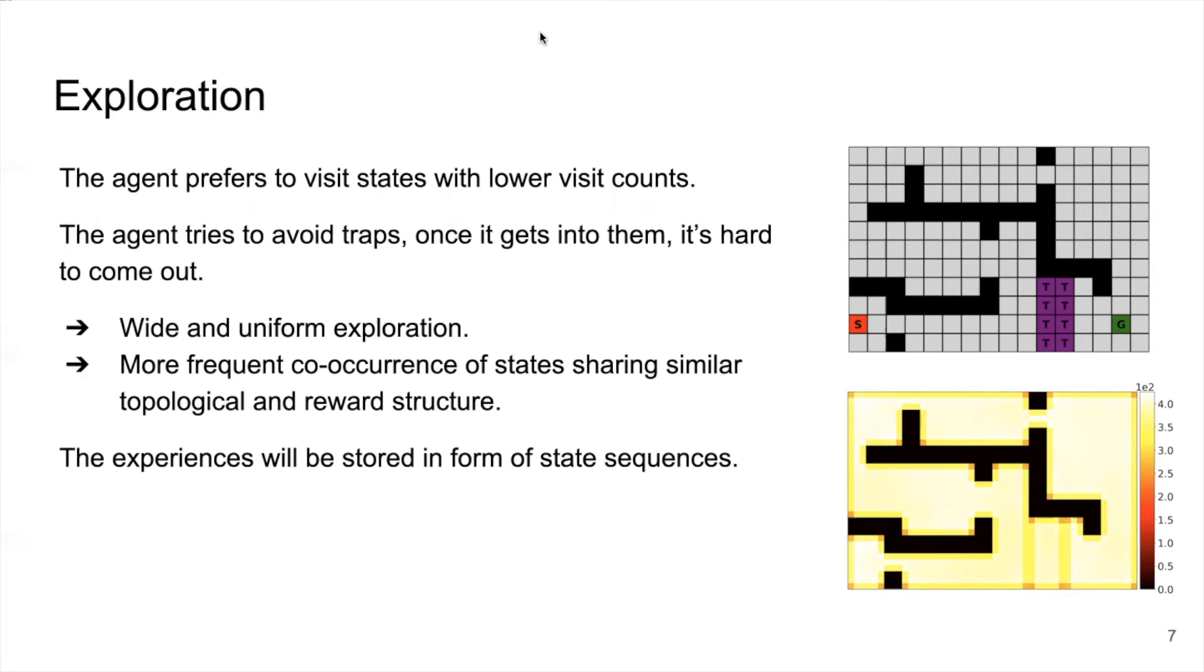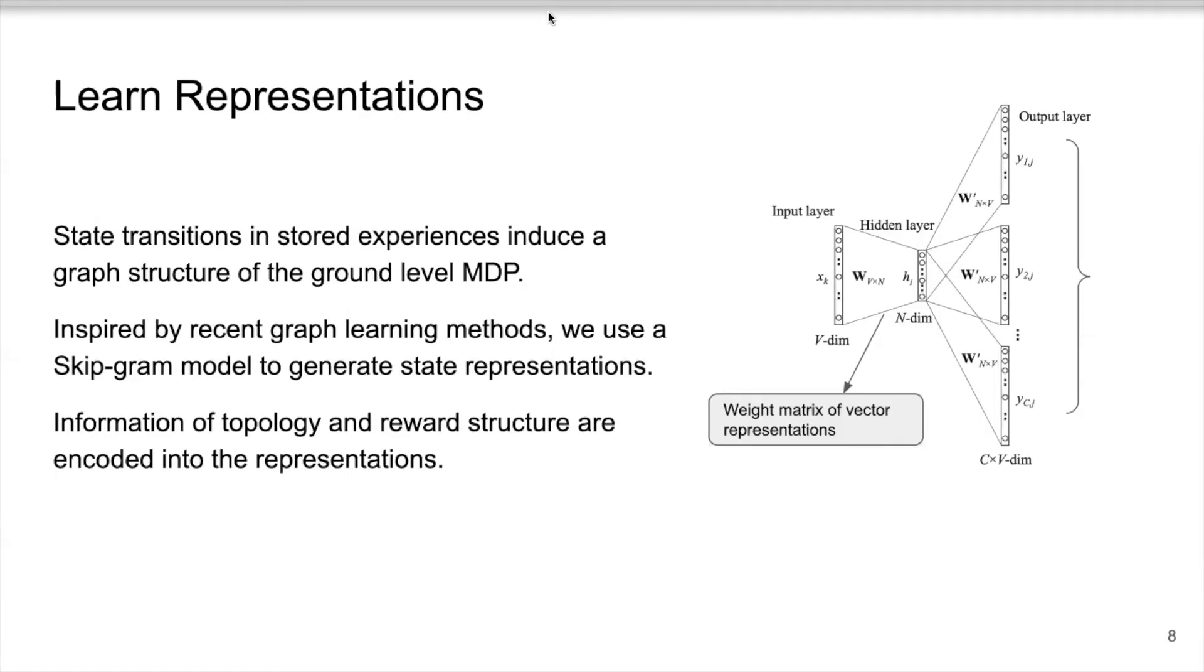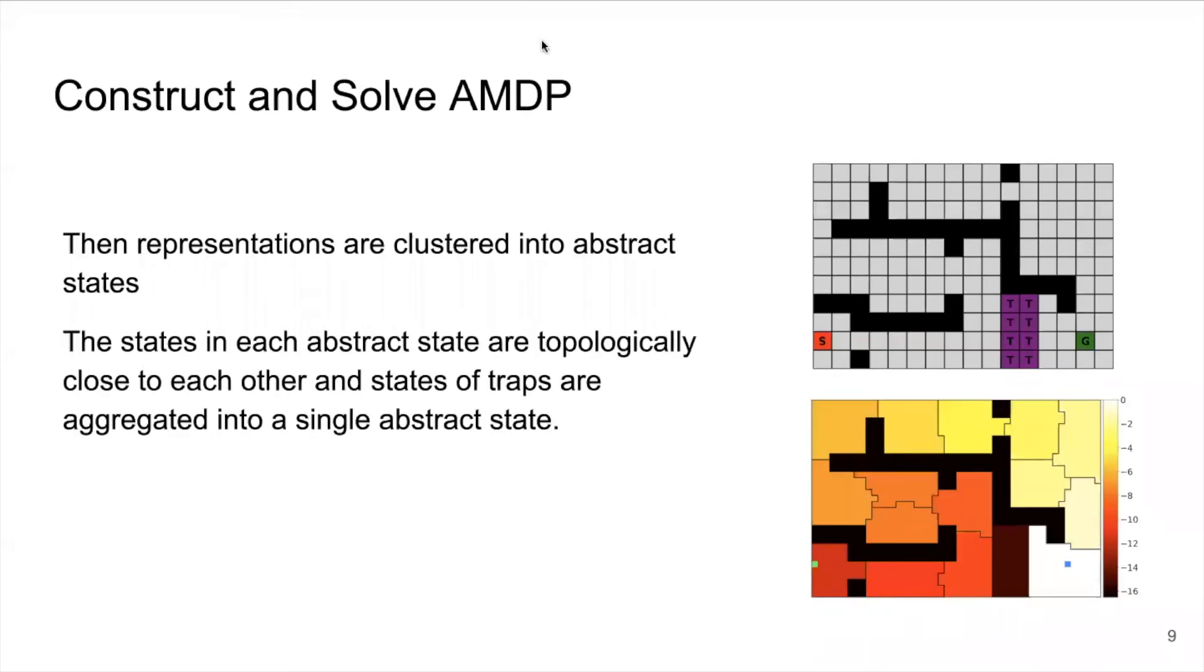During exploration, no updates will be done for the ground learning process. The experiences in form of state sequences will be stored for the next phase. Here, we note that state transitions in stored experiences induce a graph structure of the ground level MDP. Inspired by recent graph learning methods, we use a skip-gram model to generate state representations. Consequently, the information of topology and reward structure are encoded into the representations.